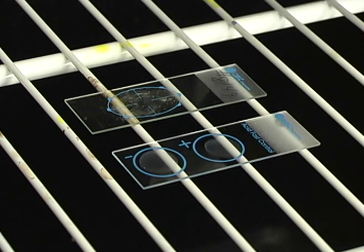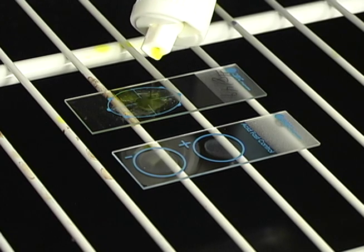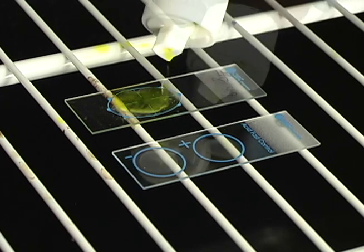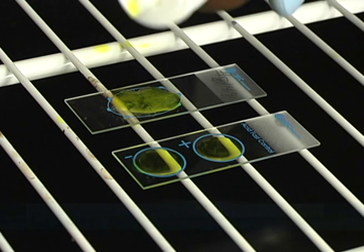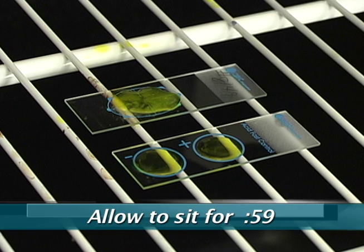To apply the FAST Armin O stain, dispense 8 to 10 drops or enough stain to completely cover the smeared area. Allow the slide to sit for 1 minute at room temperature.